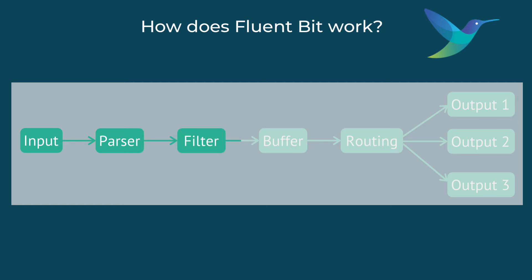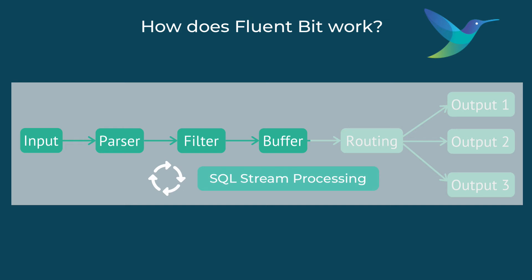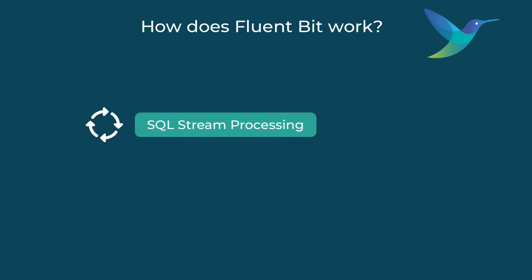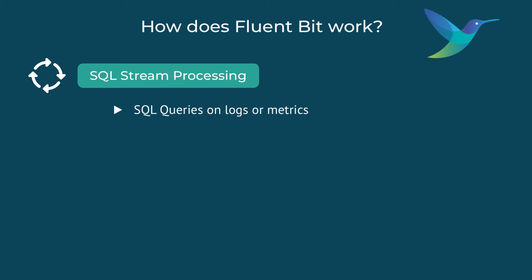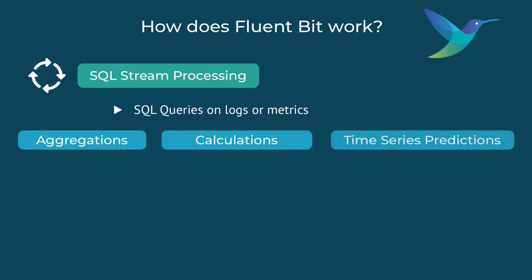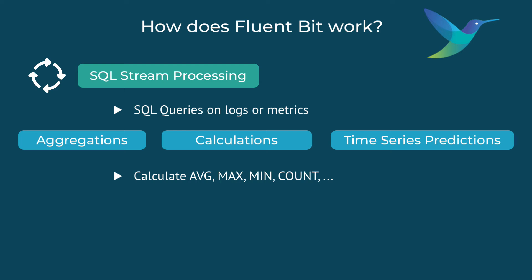In addition to all of this, one unique advanced feature that FluentBit has is SQL stream processing. This allows users to write SQL queries on the logs or metrics to do aggregations, calculations, and even time series predictions. This is super useful if you need to calculate an average, max, or min before sending the data to storage, or count the number of times a message appears, or aggregate data to reduce data costs. The best part about SQL stream processing is that no database and no indices are required — everything runs on the same lightweight, high performance process, so you still keep that high performance and resource efficiency of FluentBit.